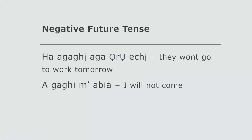Moving on, here we have the negative in the future tense. If we want to talk about something we will not do in the future tense, for example: 'Haa agai aga oru echi' — they won't go to work tomorrow. Notice 'hagai aga,' where 'aga' is the verb to go. Go revisit our lesson on the verb 'ibo,' the verb to be, and it's going to be more understandable to you.